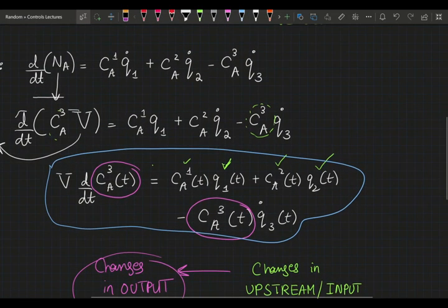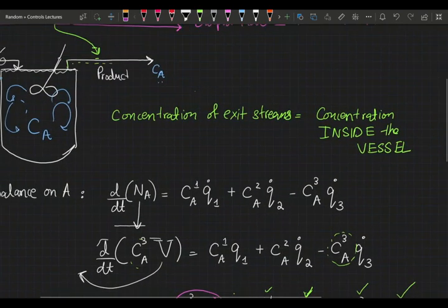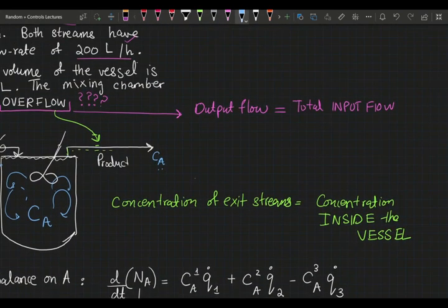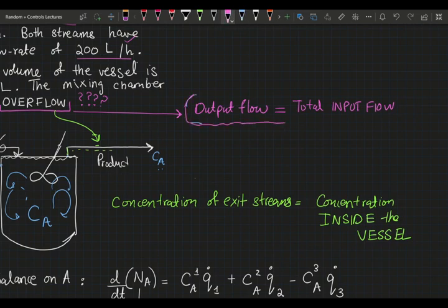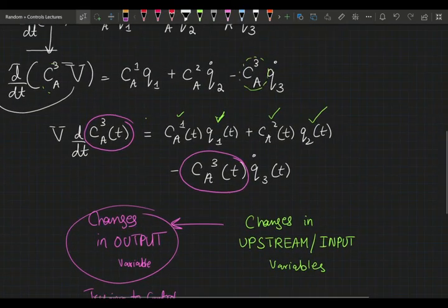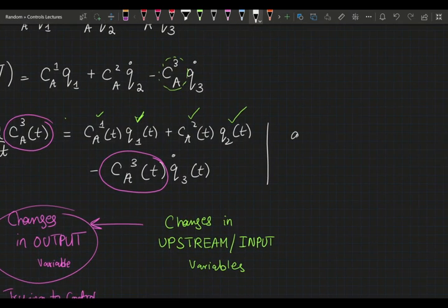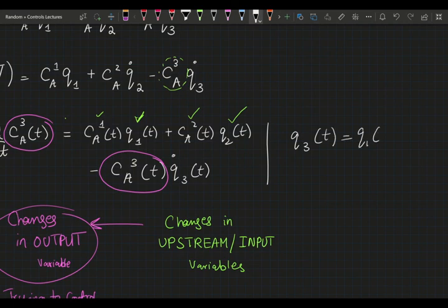One last thing I almost forgot: remember when we said that for an overflow system, the output flow rate has to equal the total input flow rate? Therefore, you can rewrite, you can have q_3 in terms of q_1(t) plus q_2(t).